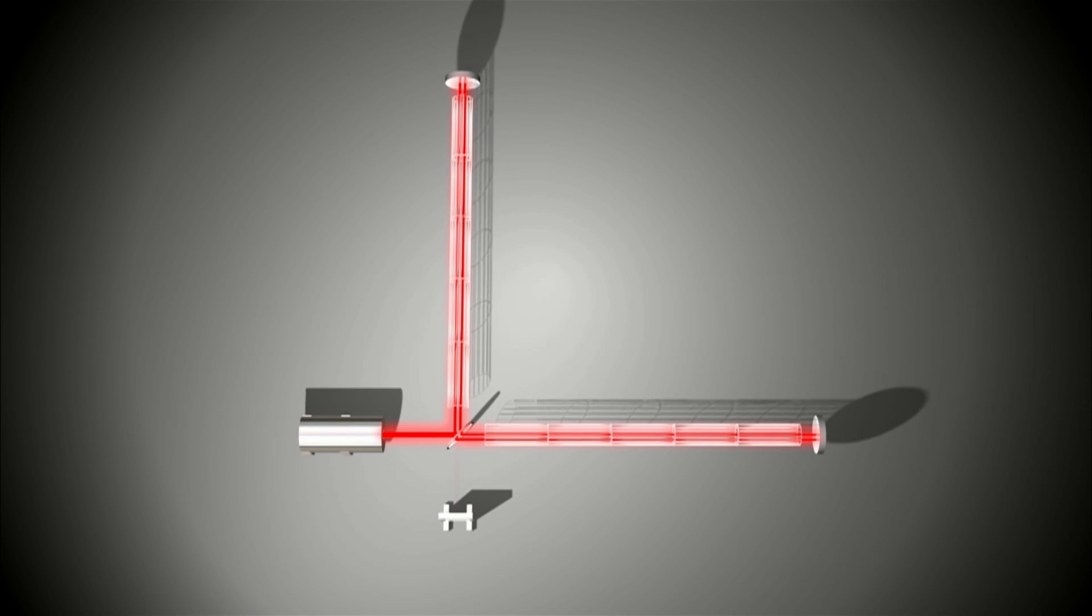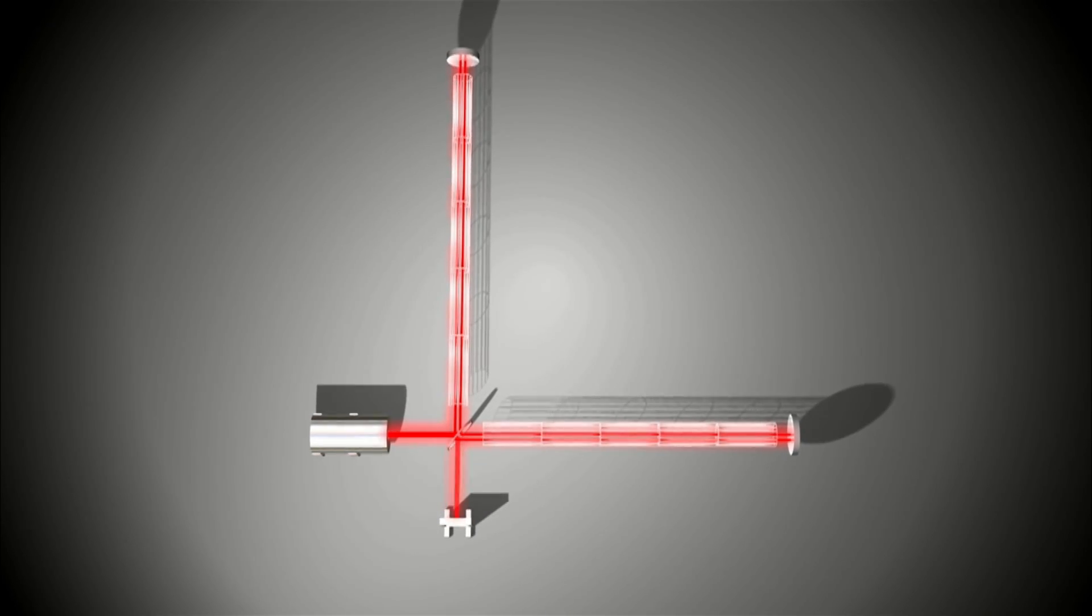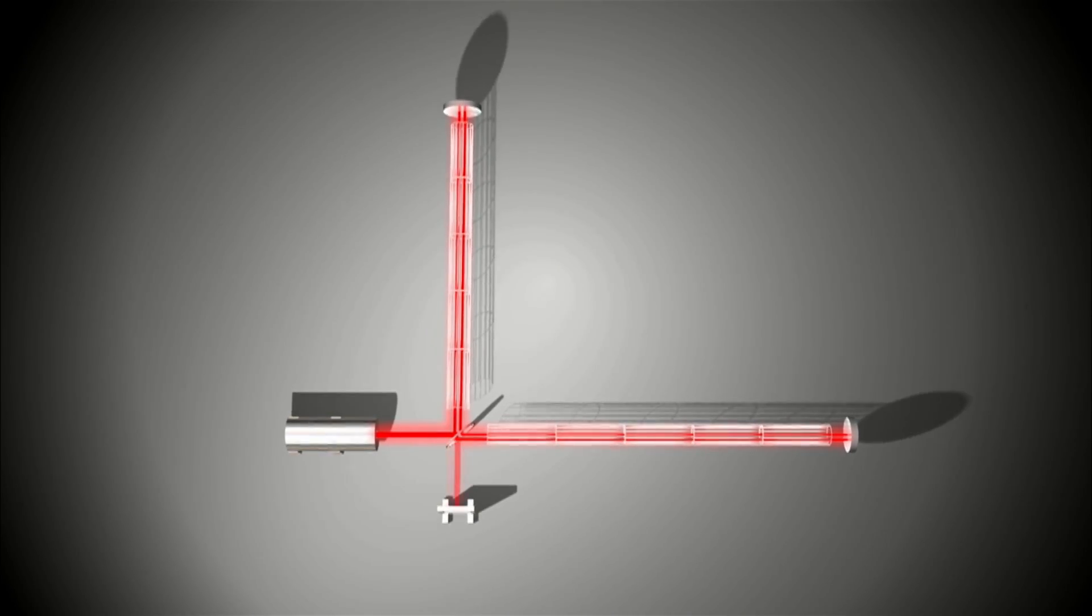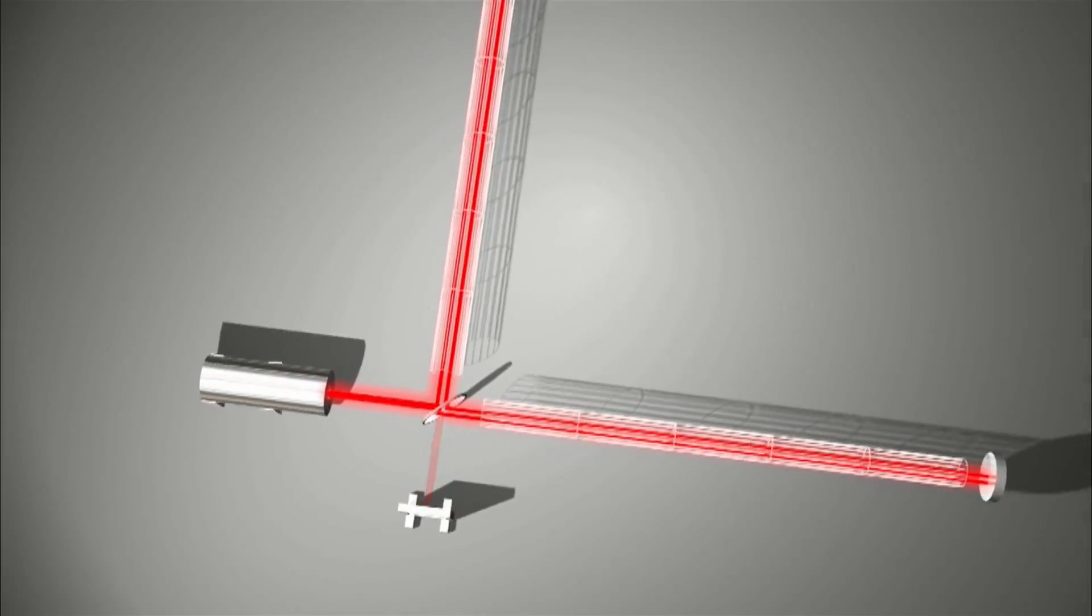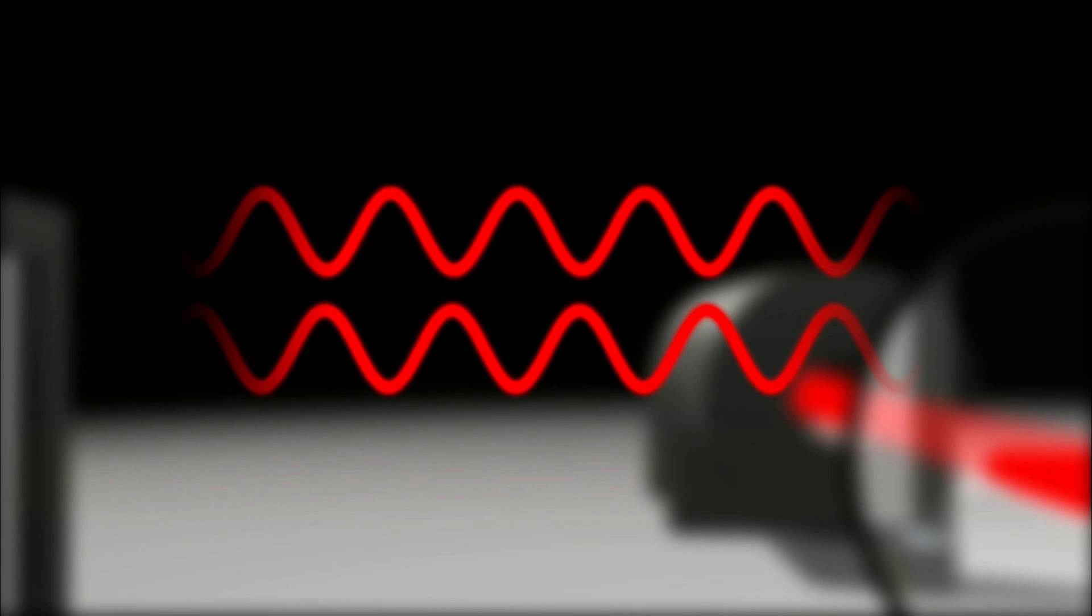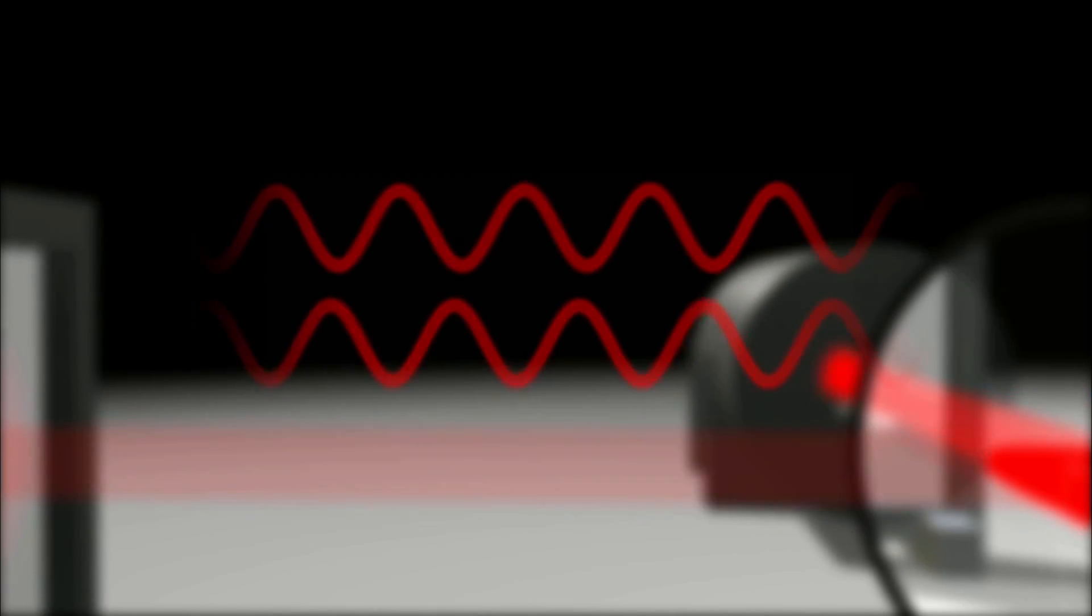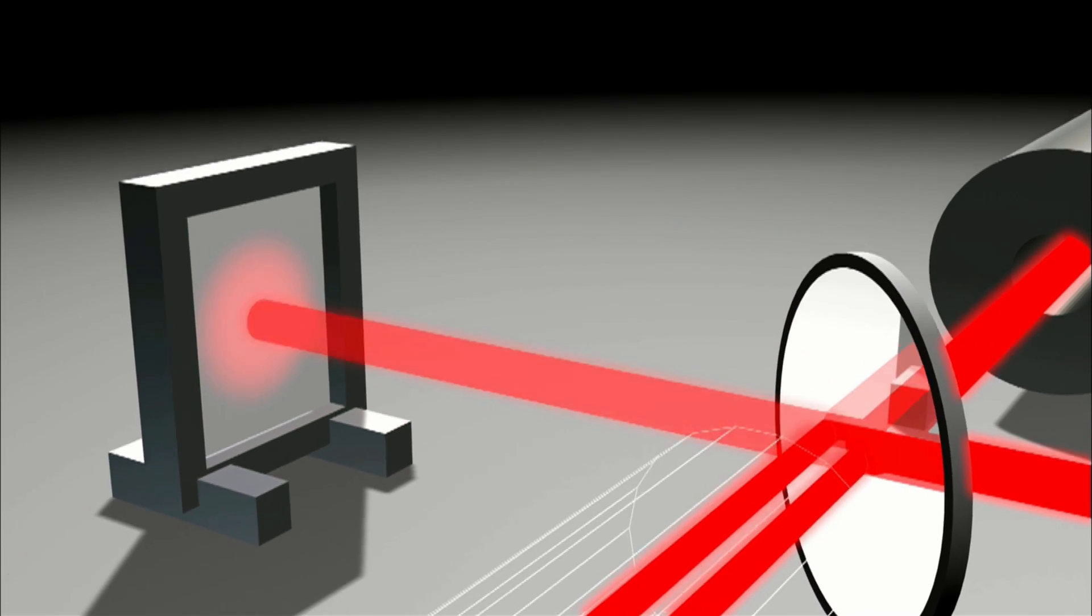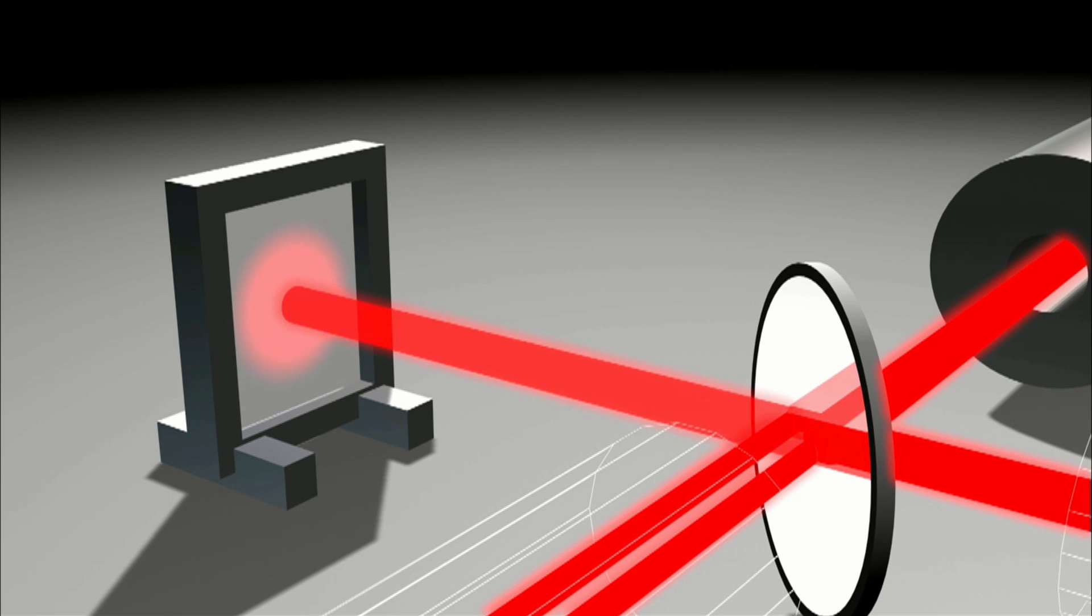This back and forth stretching and squeezing happens over and over until the wave has passed. As the distances change, so does the alignment between the peaks and valleys of the two returning light waves. And the light waves no longer cancel each other out when added together in the recombined beam. Now some light does reach the detector with an intensity that varies as the distance between the mirrors varies.